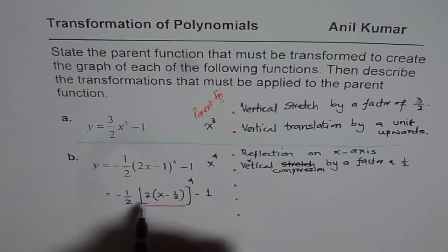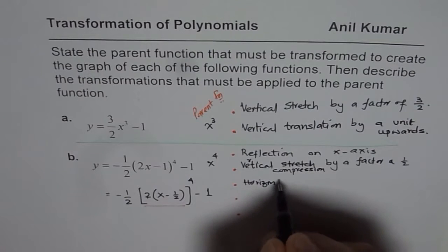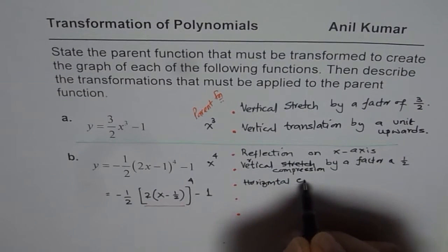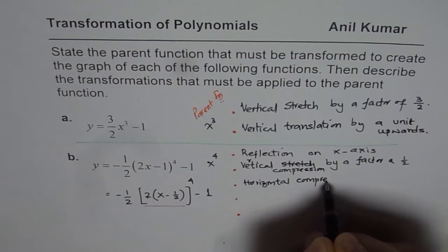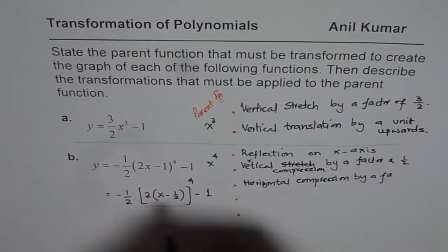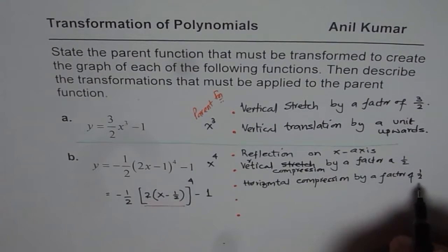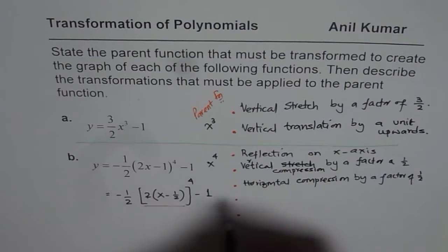And then, we have horizontal compression by a factor of, one over that term, by a factor of 2, one over 2, so half.